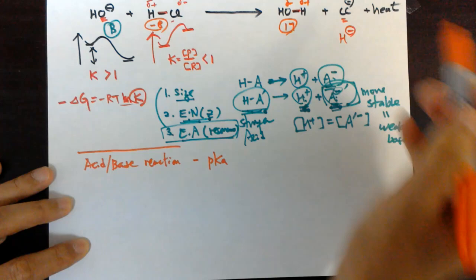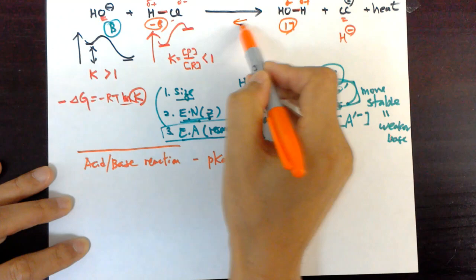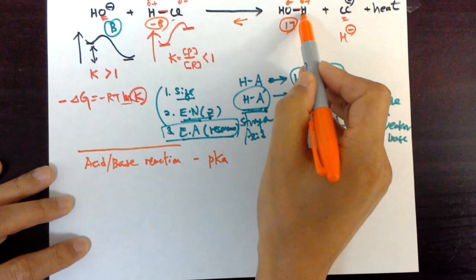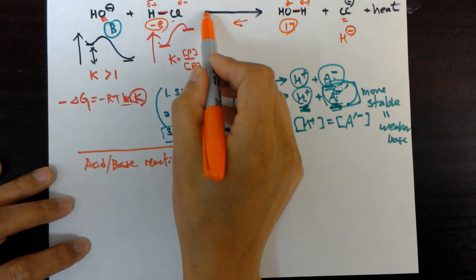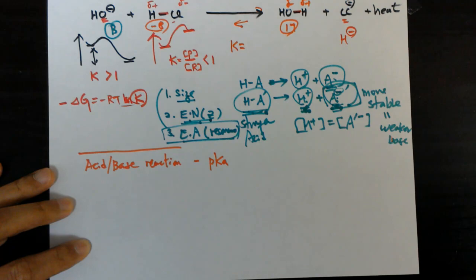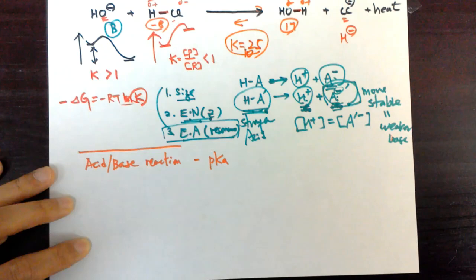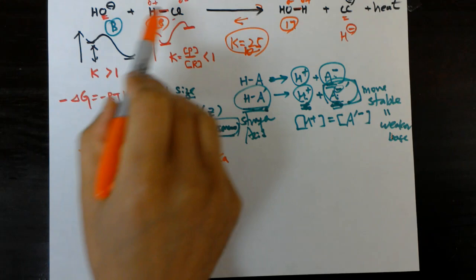Compared to HCl, water's dissociation is only about 10 to the negative 17. So the much better acid forces the reaction forward. Roughly speaking, the equilibrium constant is about 10 to the power of 17 minus (negative 8), so about 10 to the 25 — an extremely large K value. So the reaction is extremely favored forward between a strong base and a strong acid.